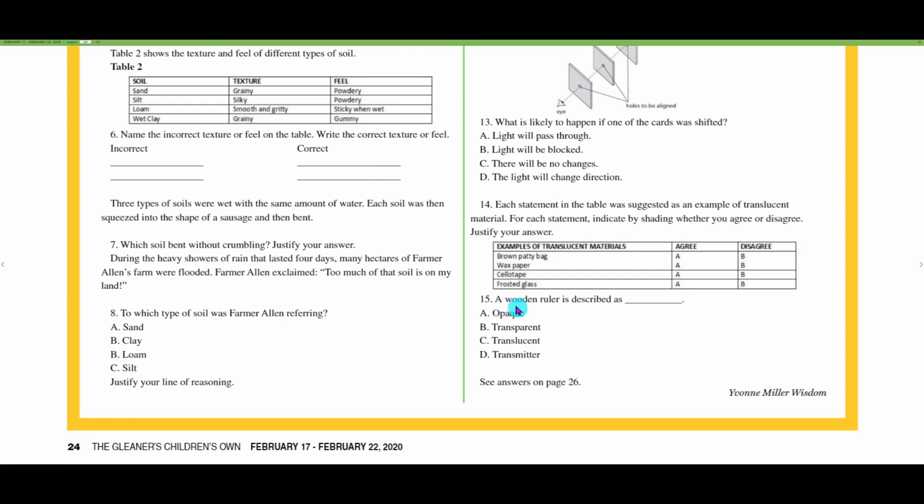Number fifteen: a wooden ruler is described as opaque, transparent, translucent, or transmitter. I would go with opaque. A wooden ruler, not a clear plastic ruler but a wooden ruler would be opaque.